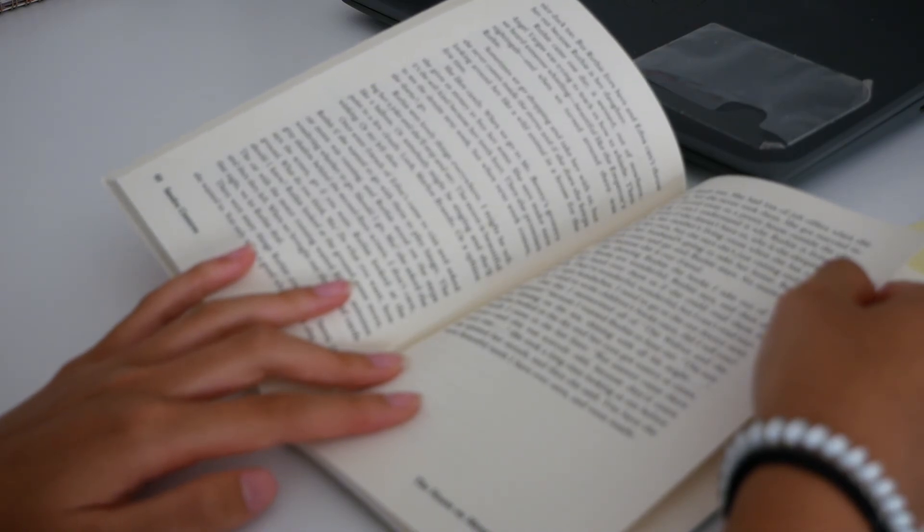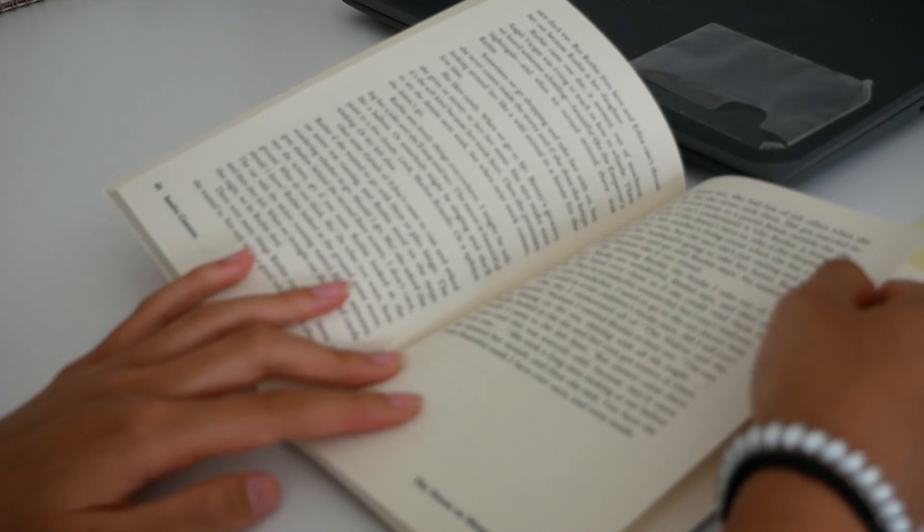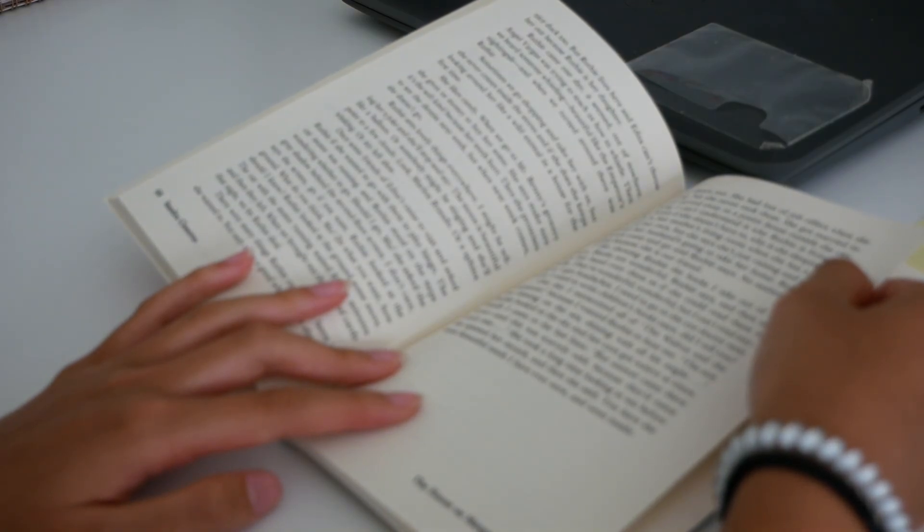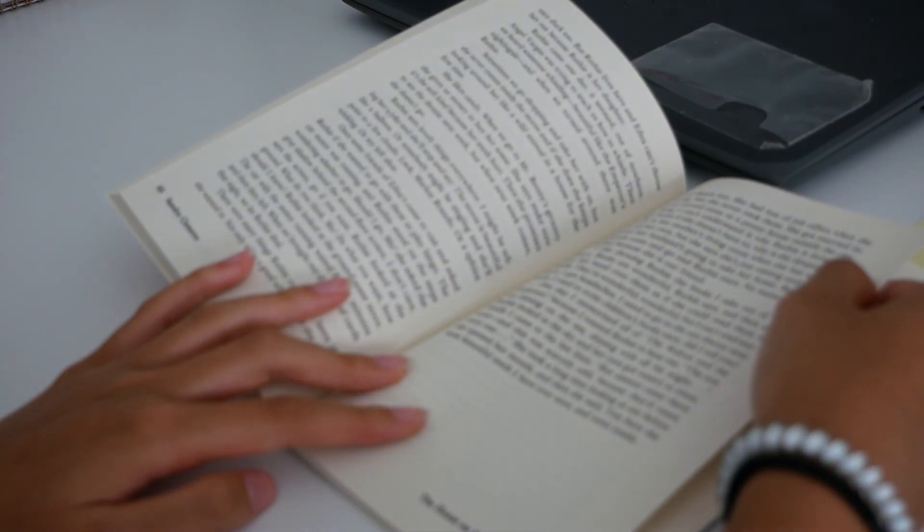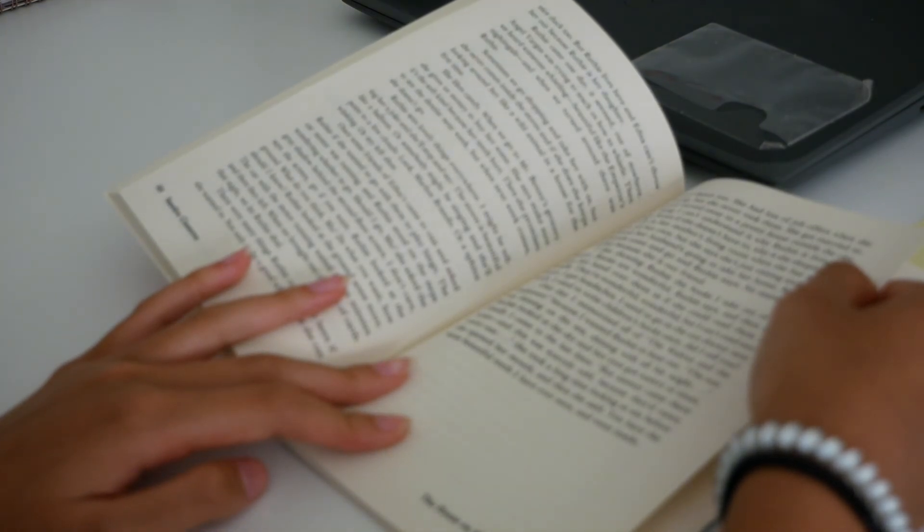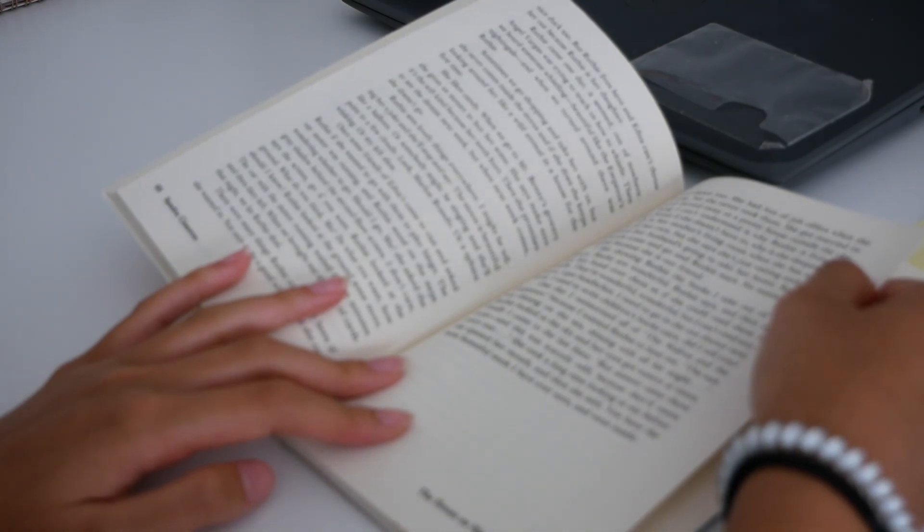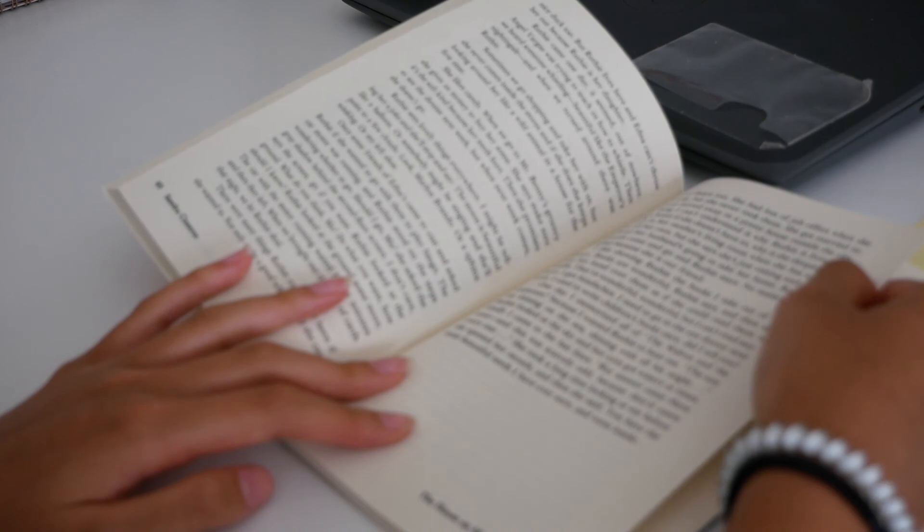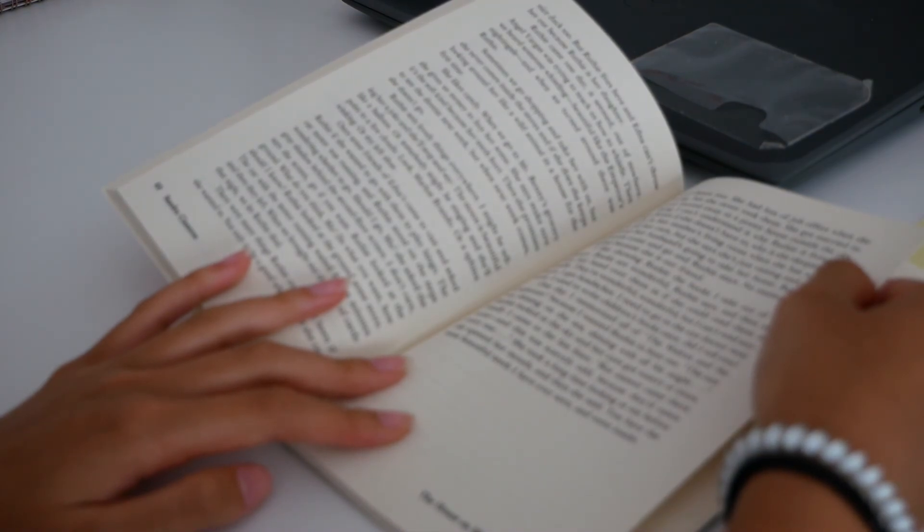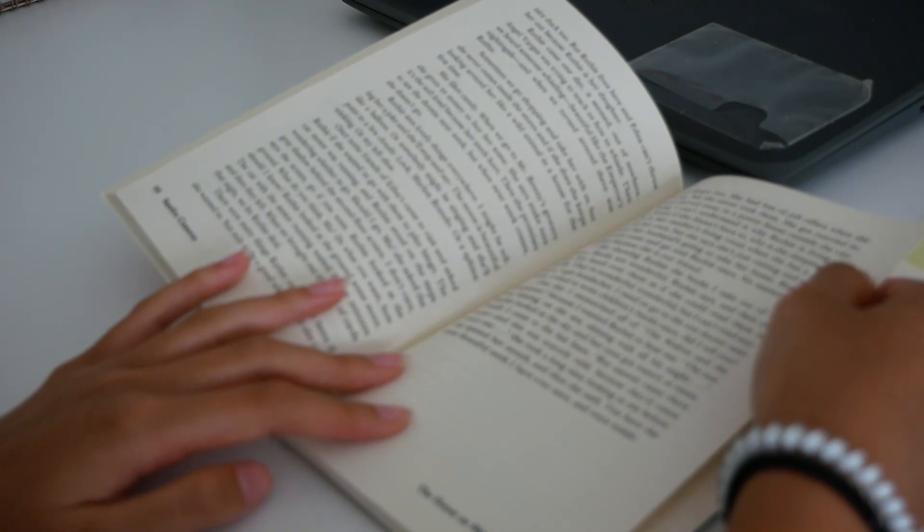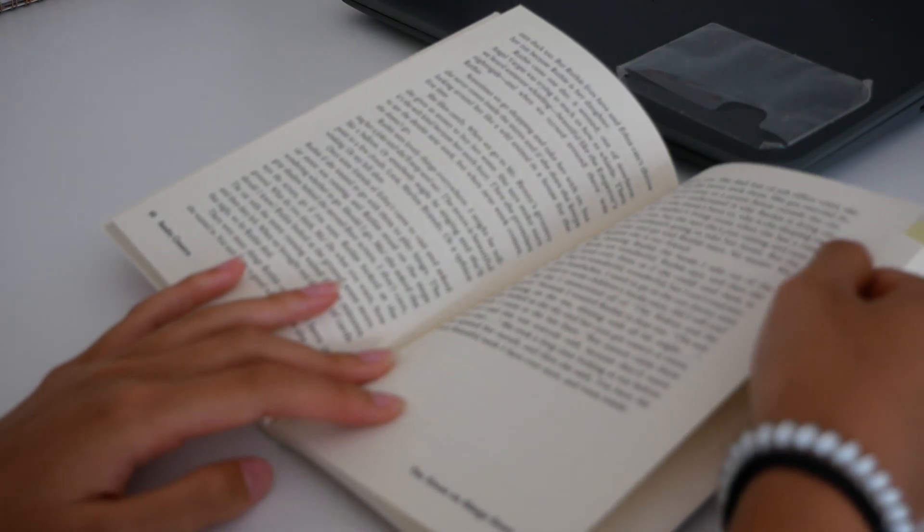One day I memorized all of The Walrus and the Carpenter because I wanted Ruthie to hear me. The sun was shining on the sea, shining with all his might. Ruthie looks at the sky and her eyes got watery at times. Finally, I came to the last line. My answer came there, none. And this was scarcely odd because they'd eaten everyone. She took a long time looking at me before she opened her mouth. And then she said, you have the most beautiful teeth I've ever seen. And went inside.